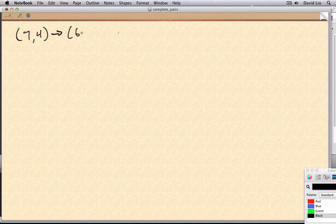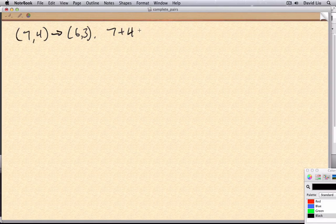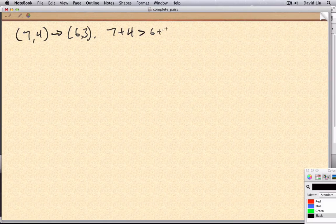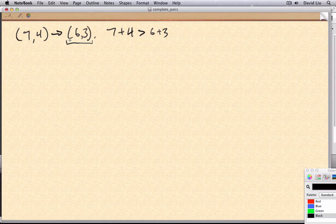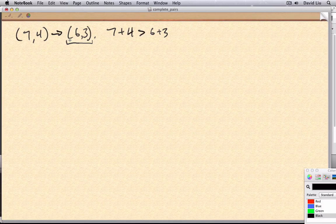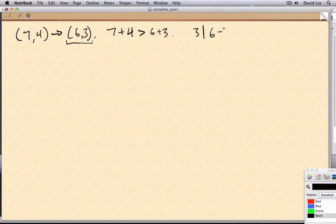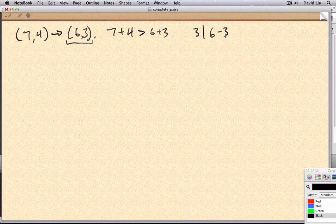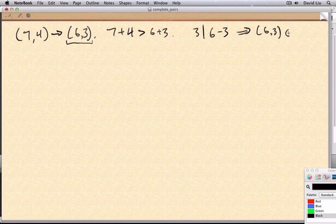And imagine applying this first recursive rule backwards, so that we get 6,3. First of all, 7 plus 4 is bigger than 6 plus 3. So this is certainly smaller, according to our measure of size from earlier. Also, 3 divides 6 minus 3. So we can actually use our induction hypothesis here and get that 6,3 is in s.